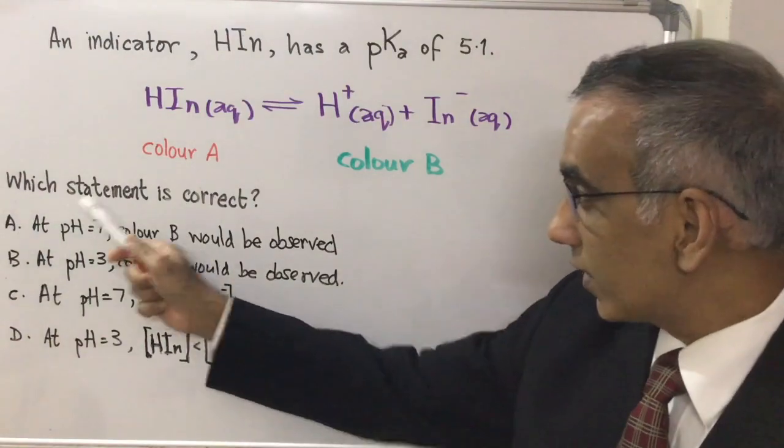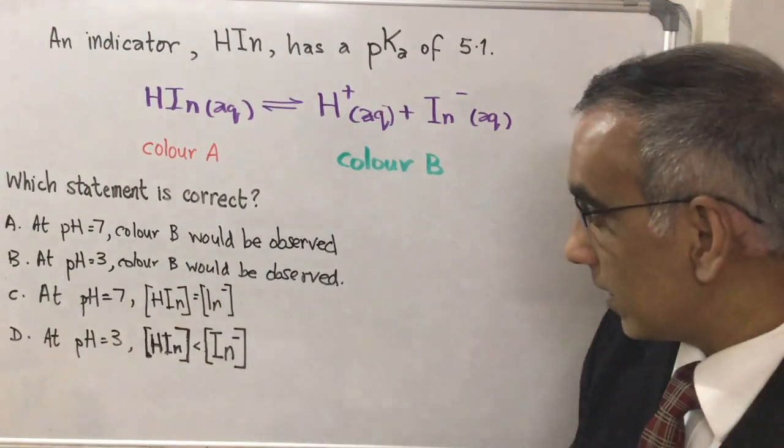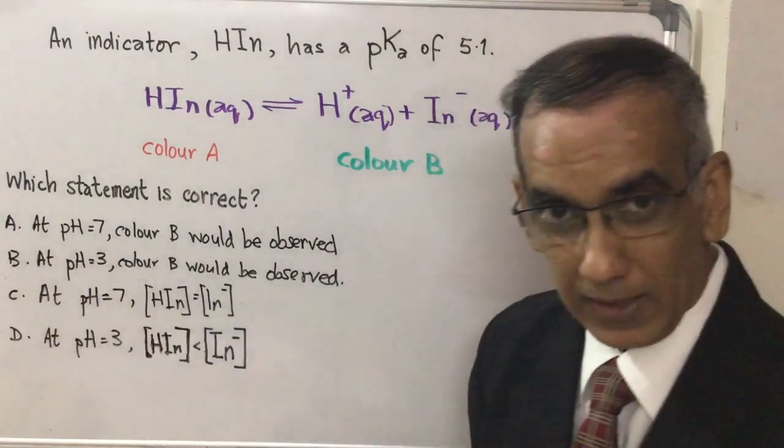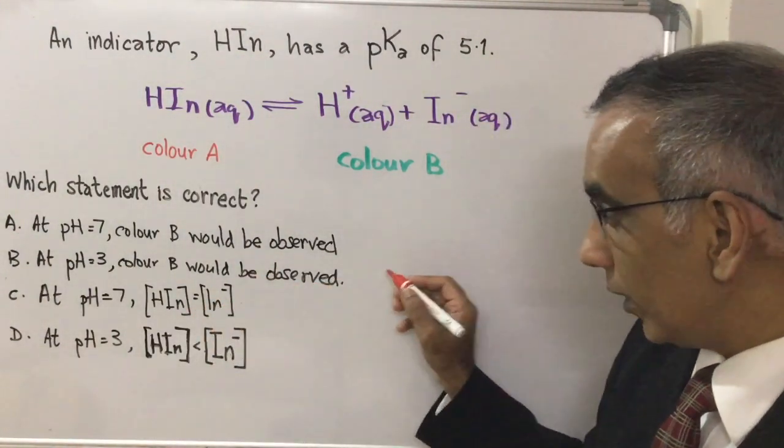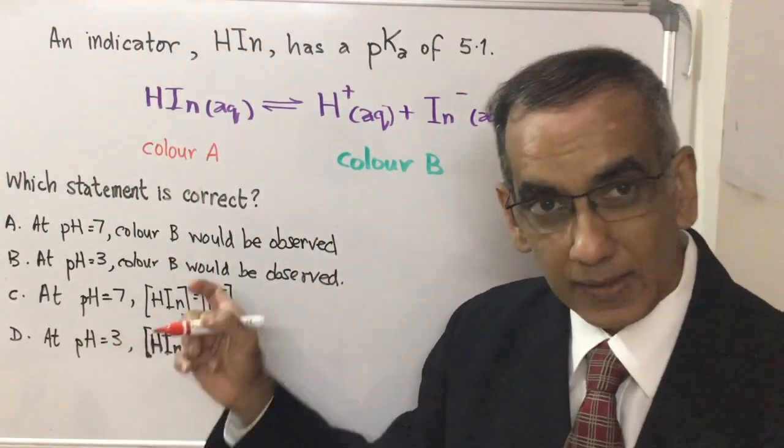So which statement is correct and you've got these four statements here. Let's begin with statement B. At pH 3 color B would be observed and we also see that pH 3 is showing up with statement D.